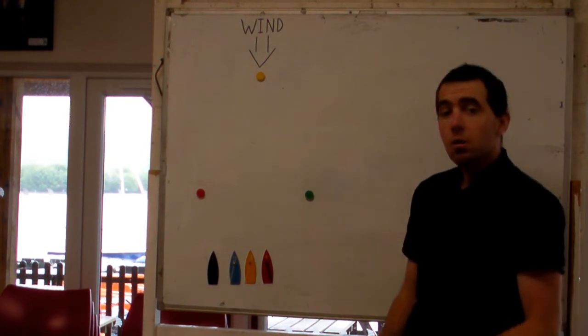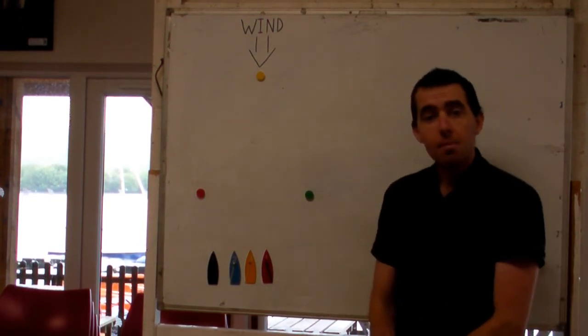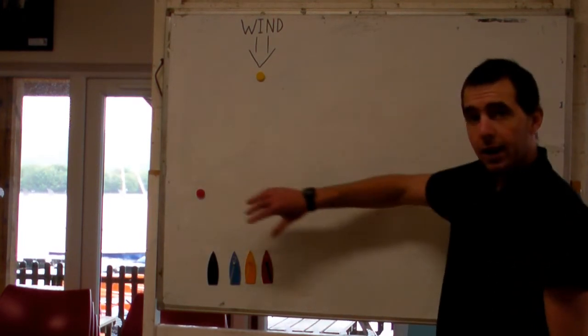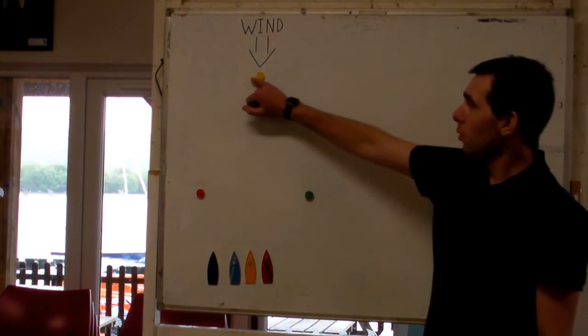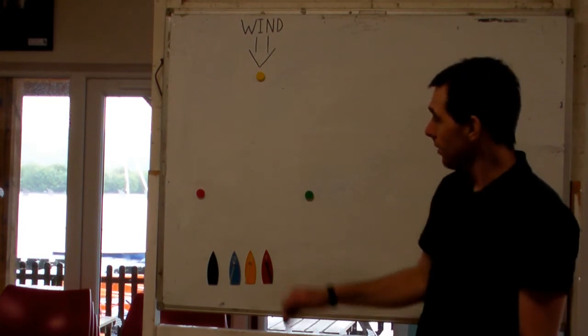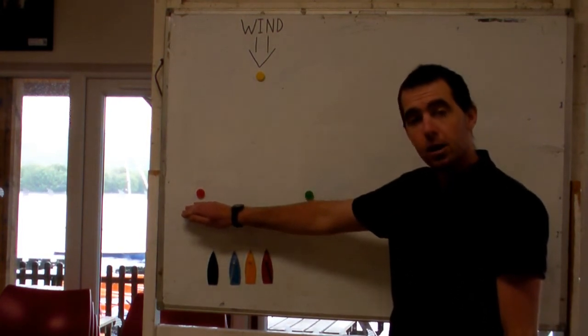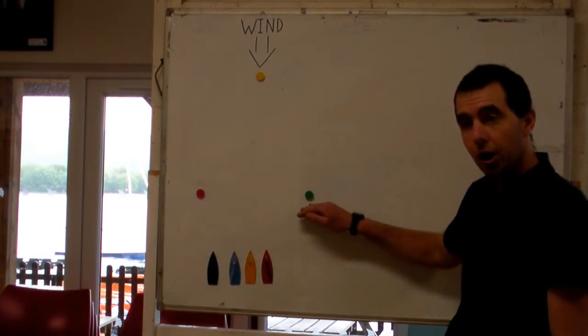Now we've got our information. We're going to talk about choosing where to start on that start line, but also which tack you want to start from. Just talk about what we've got laid out here. We've got the wind from the top of the board blowing down. We've got this yellow buoy here, which is our windward marker, our first mark of the race. Then we've got our start line just here. We've got our red marker here for the port end of our start line, and the green one here for our starboard end.